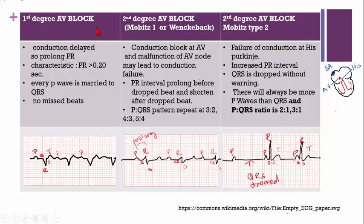First degree AV block: the conduction is delayed, so there is a prolonged PR interval. The characteristic PR interval is greater than 0.20 seconds. Every P wave is married to a QRS complex and there is no missed beat.